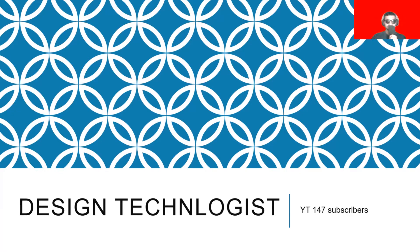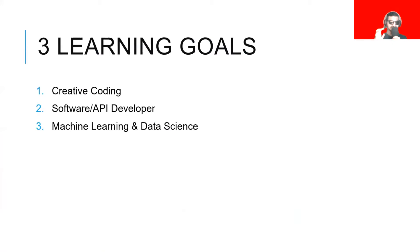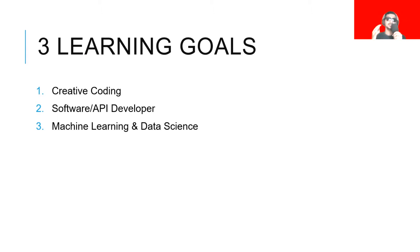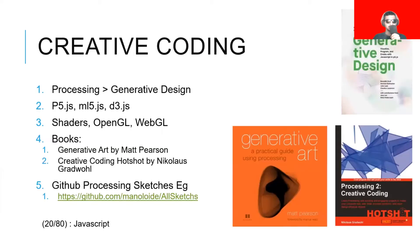The three areas are: creative coding, which involves generative design; software development; and third is machine learning and data science. I plan to develop skills in these areas over the next few months.